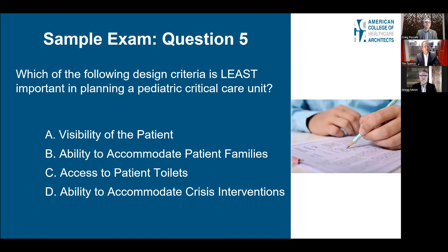The four options are: A, visibility of the patient; B, ability to accommodate patients' families; C, access to patient toilets; D, ability to accommodate crisis interventions. Understanding the pediatric environment, the least important in this case is going to be access to the patient toilets.